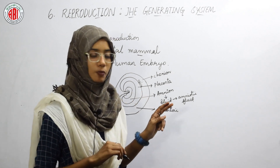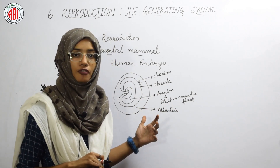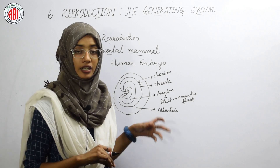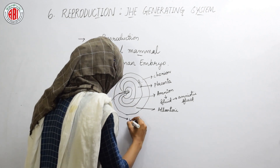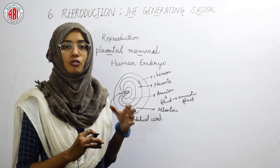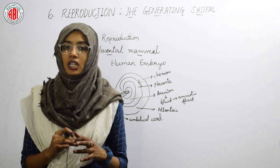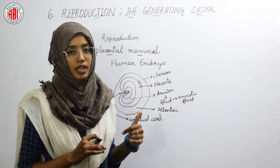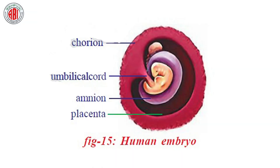One more layer is present called the allantoic membrane. This membrane is connected to the digestive system of the embryo to the outer layer. The allantoic membrane shows an important cord called the umbilical cord. The umbilical cord helps to transfer materials to the embryo. Therefore, the human embryo shows the layers or membranes: chorion, placenta, amnion, allantoic, and umbilical cord.